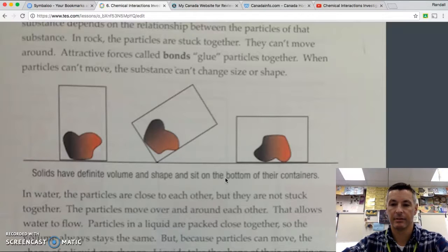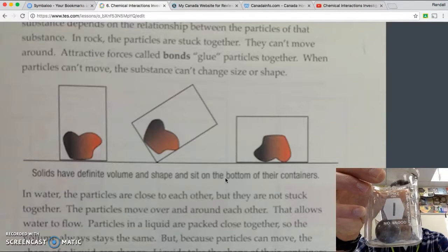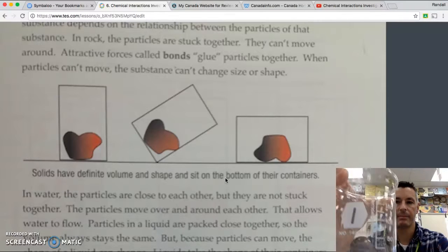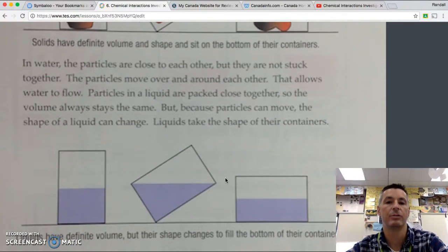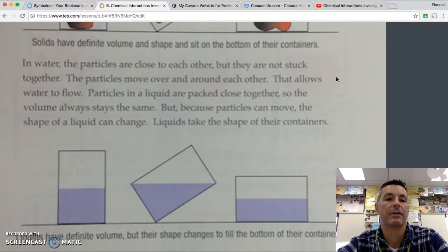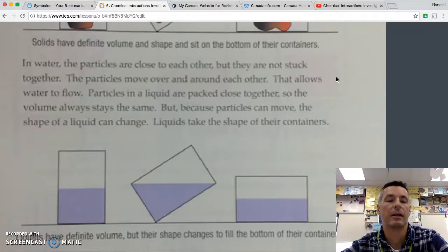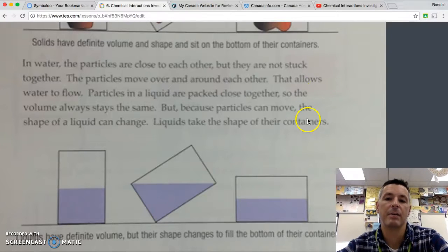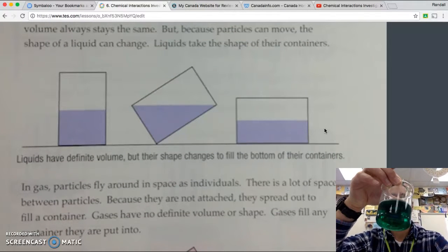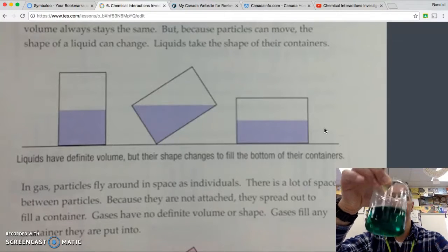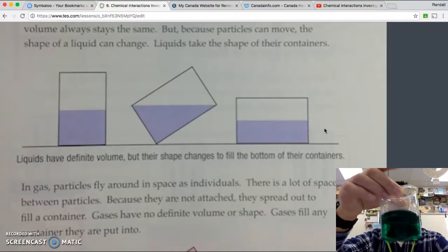Just like this. This is our rolly ball. It has a volume and a shape, but it sits on the bottom of the cup. In water, the particles are close to each other, but they are not stuck together. The particles move over and around each other. That allows water to flow. Particles in a liquid are packed close together, so the volume always stays the same. But because particles can move, the shape of the liquid can change. Liquids take the shape of their containers. So I have a liquid. It flows. It has a definite volume, but their shape changes to fill the bottom of the container.